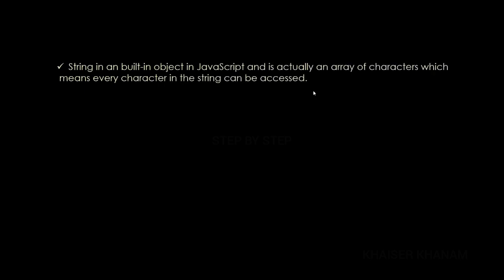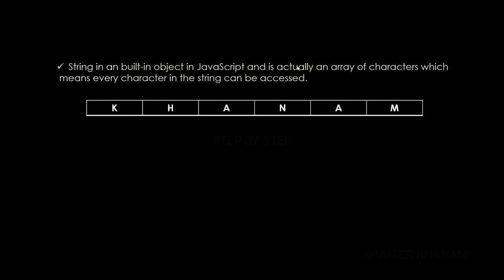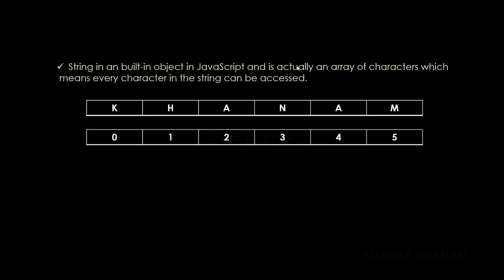String is a built-in object in JavaScript and it is actually considered as an array. If you are aware of arrays, you know we can access letters using the index number. In the same way, using strings we can also access individual letters — for example, 'k' will have index 0, 'h' will have index 1, and so on.